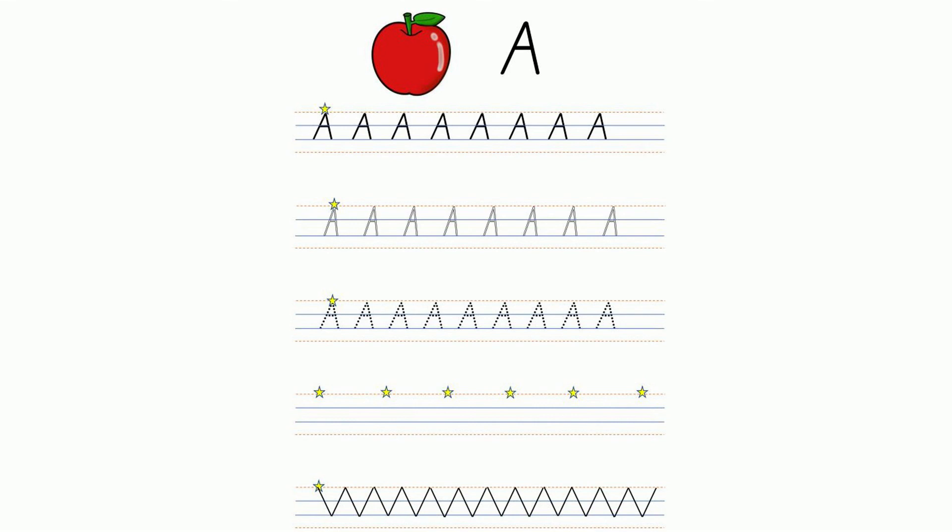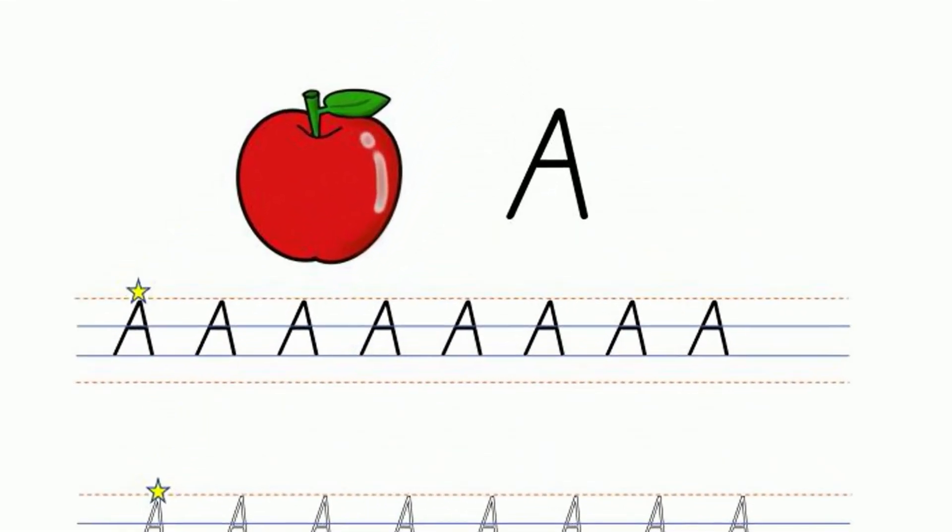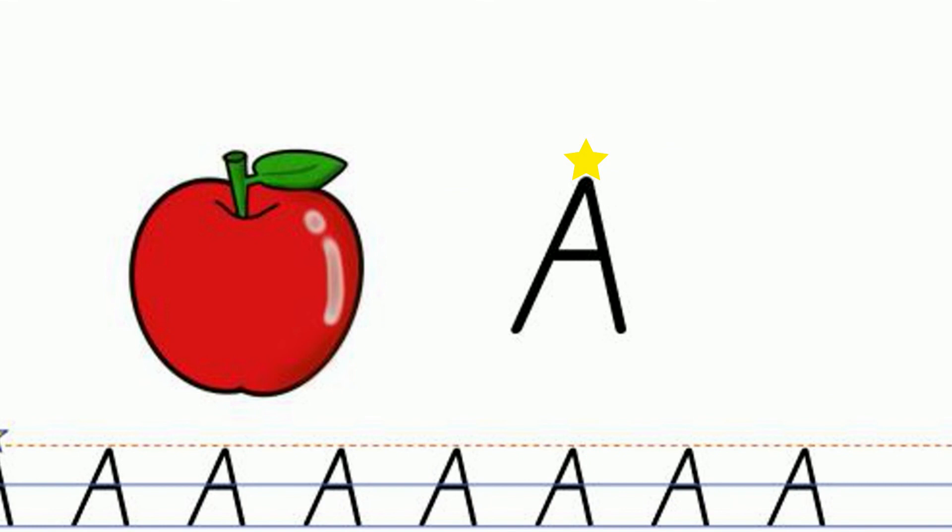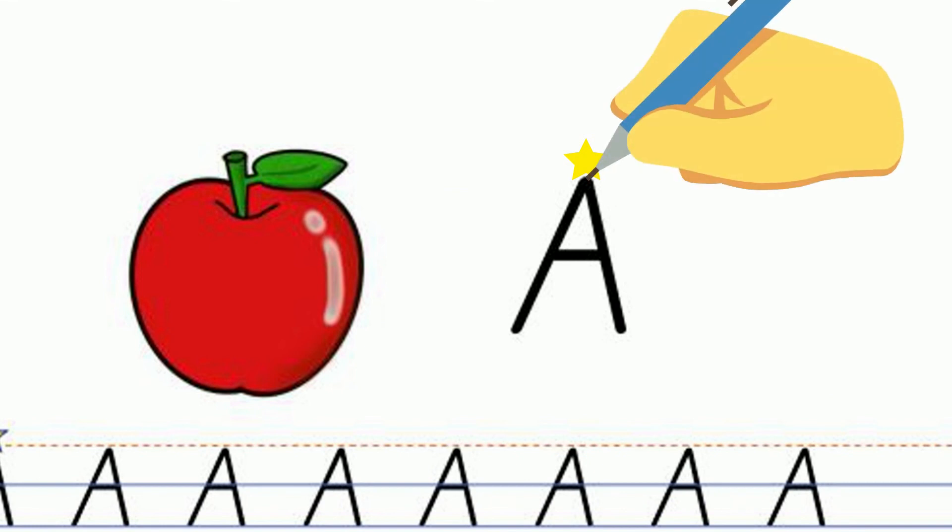Today's activity is a handwriting sheet to learn to write the capital letter A. We begin at the top of the letter where the starting star is. Pencil down and one straight line down. Take your pencil off, go back to the starting star and do a second line straight down. Pencil off and we do one straight line from one side to the other.